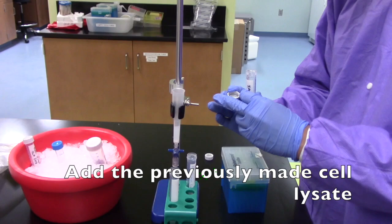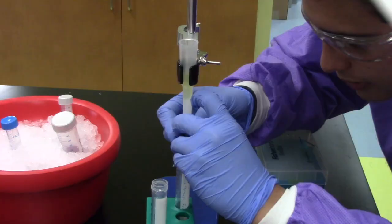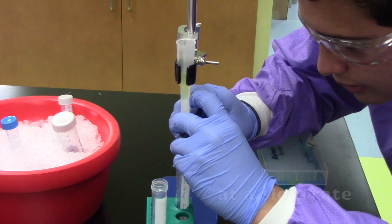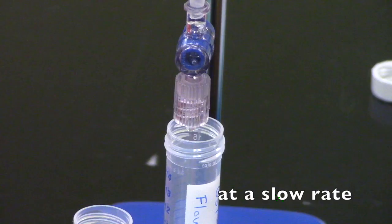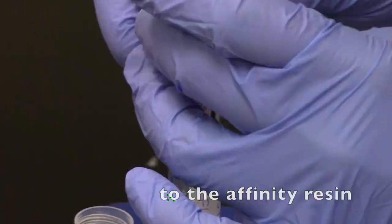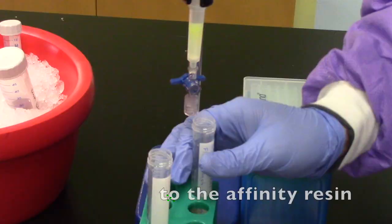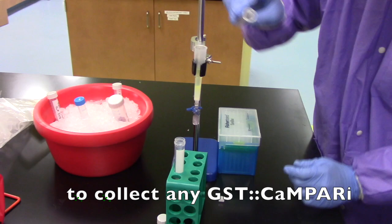Add the previously made cell lysate. Allow it to flow through at a slow rate. This enables efficient GST Campari binding to the affinity resin. Add this flow through again to collect any GST Campari that was not previously bound to the affinity resin.